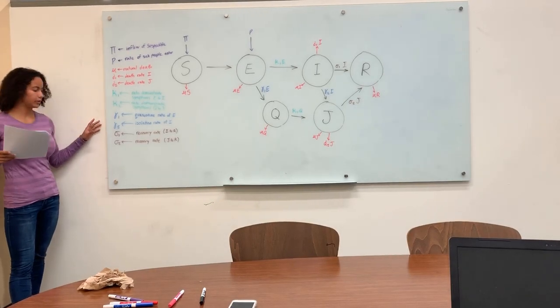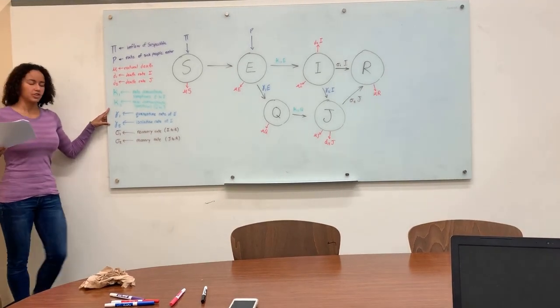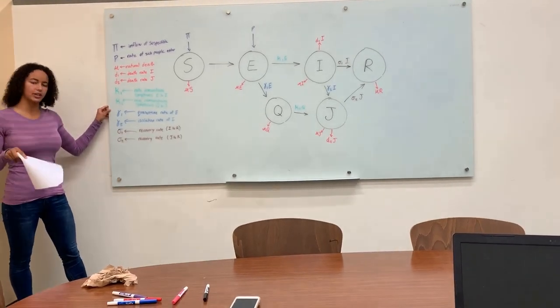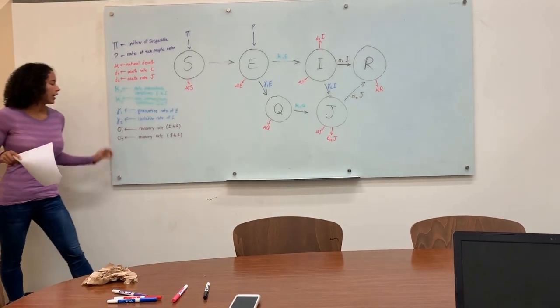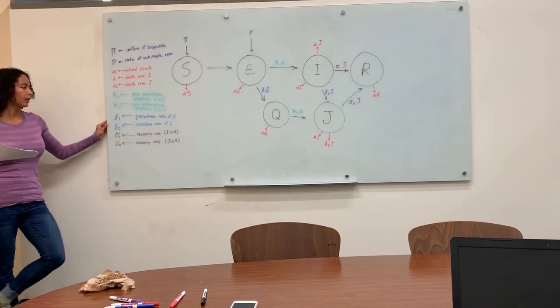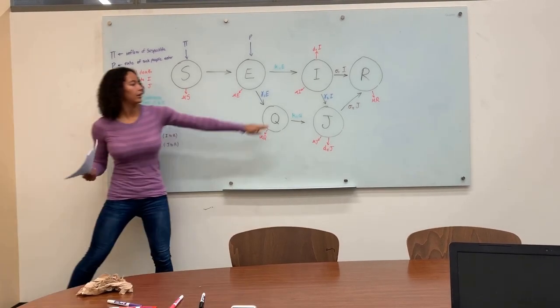We now have the parameters for controlling disease, which include Kappa 1, which is quarantining from group E, which is asymptomatic, and isolation of the people that are symptomatic.